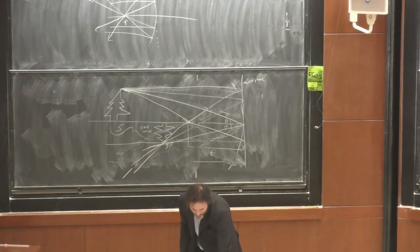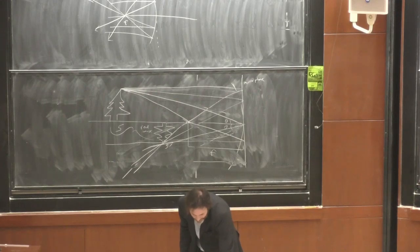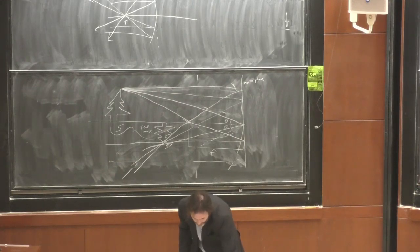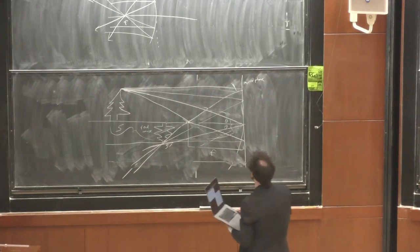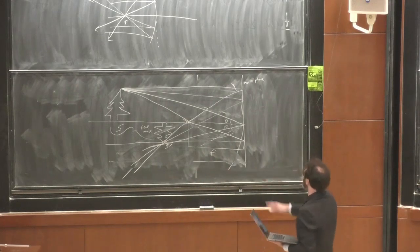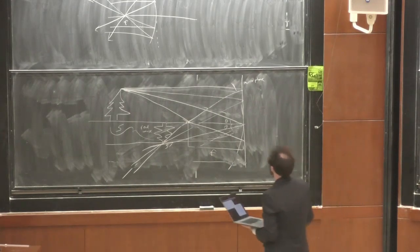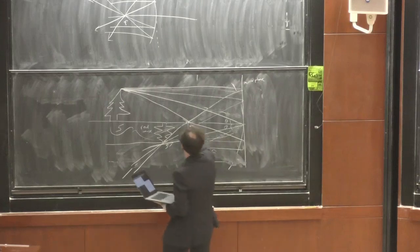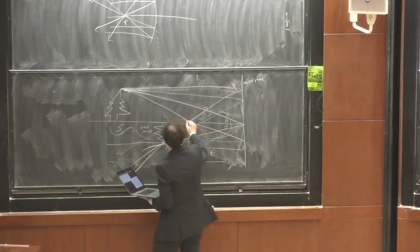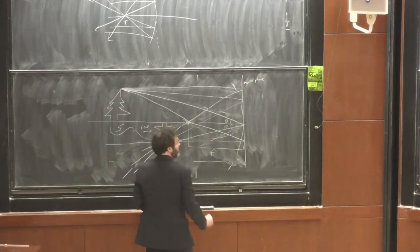Here we go. So that's what it looks like if it's real — the focal length is here, the object is behind the focal length, so it's a real image. What does it look like if it's imaginary?